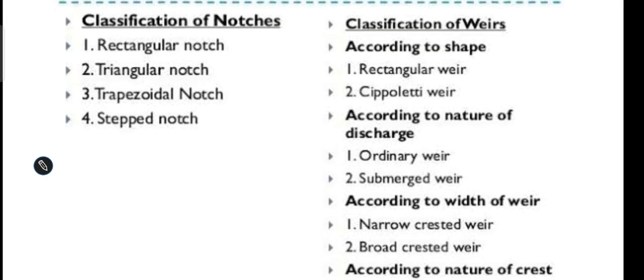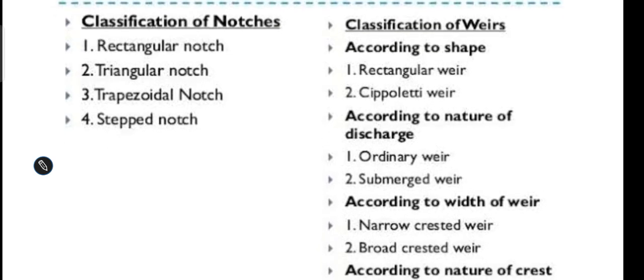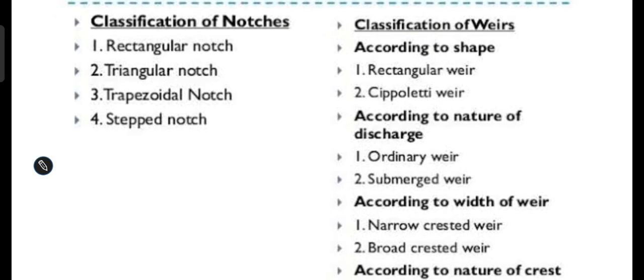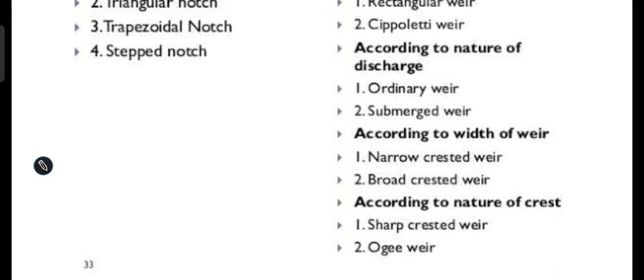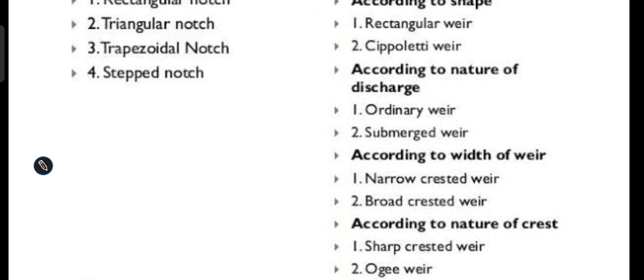These are the classifications of weirs: according to shape — rectangular or cipolletti; according to nature — ordinary or submerged; according to width — narrow or broad; and according to crest nature — sharp or broad crested.